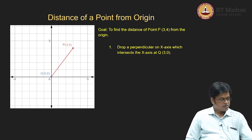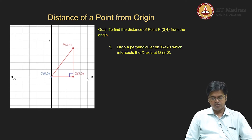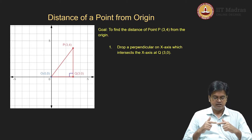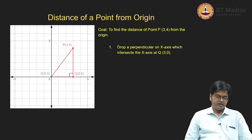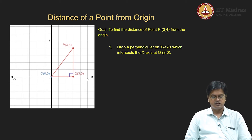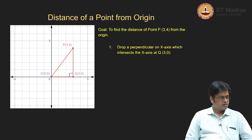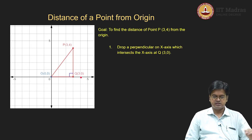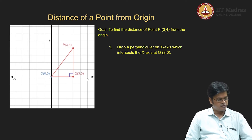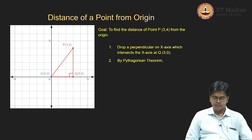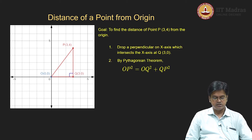Once this is done, you drop a perpendicular and see that it forms a right angle triangle with the x-axis and the vertical line in place. Do you know any theorem in conventional geometry that relates to this particular structure? You know the Pythagorean theorem, which relates this structure. In a right angle triangle, the length of the hypotenuse is given by the square root of the sum of squares of the lengths of the adjacent sides. We will use this to find the distance of a point from the origin. By the Pythagorean theorem, OP² = OQ² + QP².